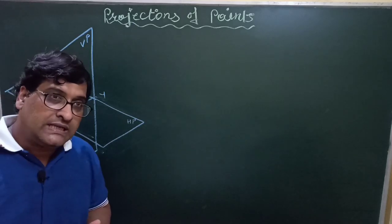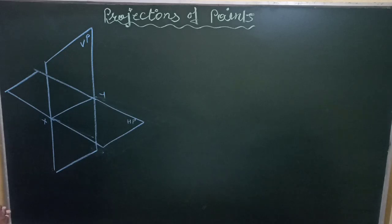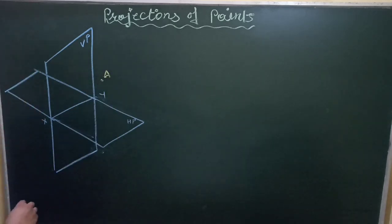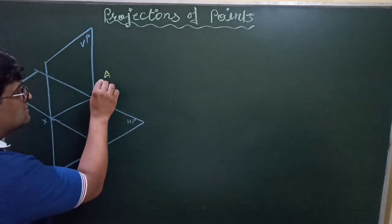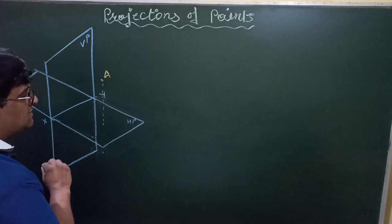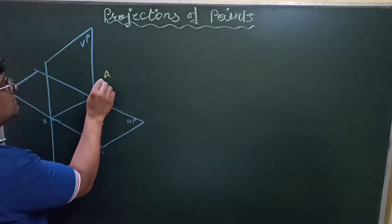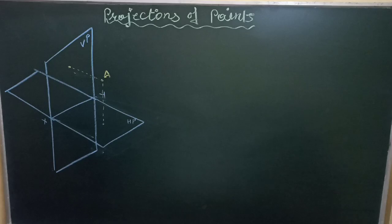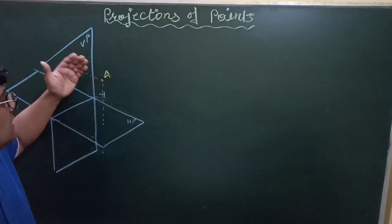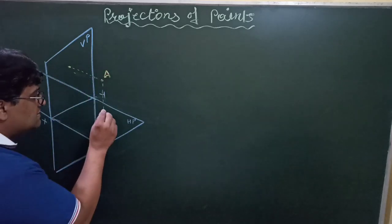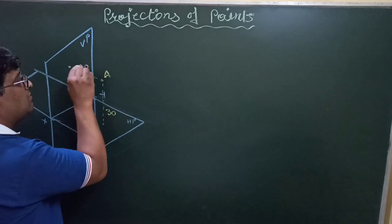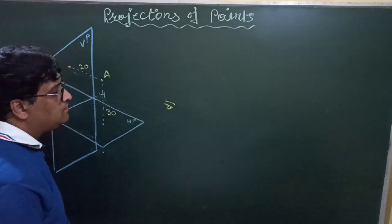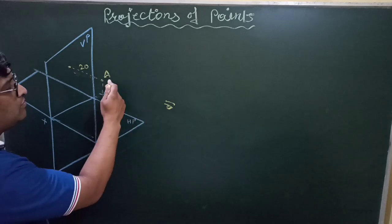Let us start with the position of a point in different quadrants. Say for example, a point A is in space and it is having some distance from the HP — say 30 mm from HP — and some distance from the VP — say 20 mm. So we will call this point as above HP and in front of VP. We are looking from the front, so the front view of point A will be drawn.